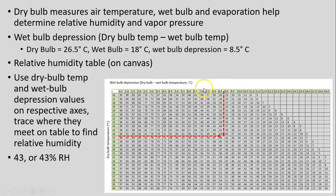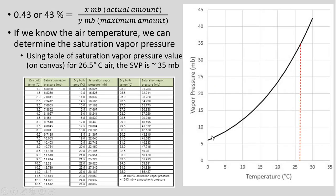You then consult a relative humidity table. On the horizontal axis across the top are wet bulb depression values — we find our 8.5°C there and trace down to match our starting dry bulb temperature of about 26.5°C. Where those two values meet, as shown by the arrows I've drawn, we get approximately 43% relative humidity.